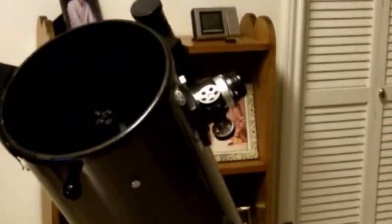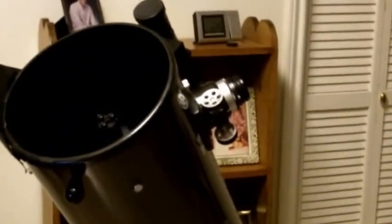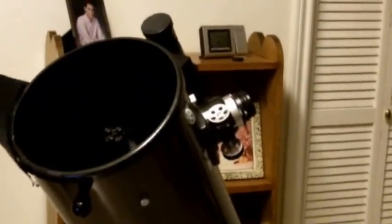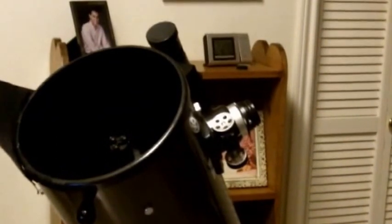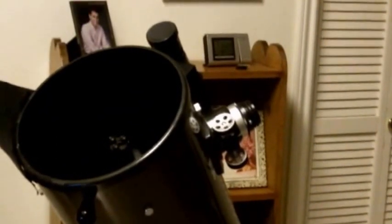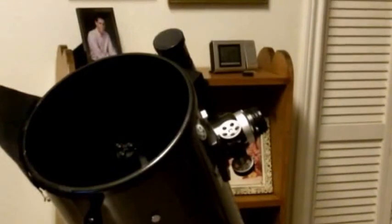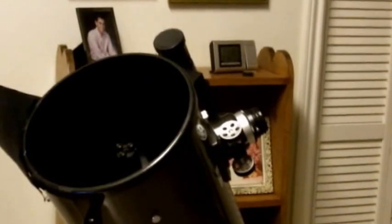A lot of people are still using a collimation cap or a Cheshire device to optically try to collimate their Dobsonians, and this is difficult to do unless you have two people. I'm going to show you a way to do it that's very quick, very accurate, and you can do it in just a minute or two once you learn how.